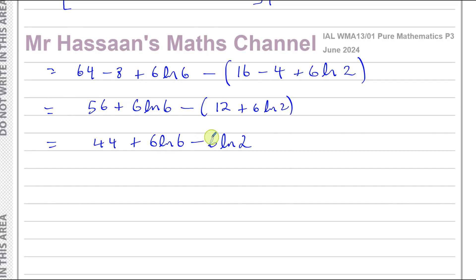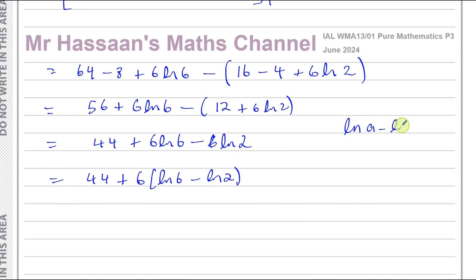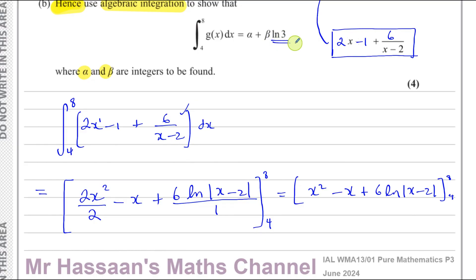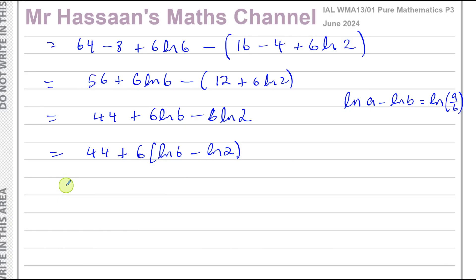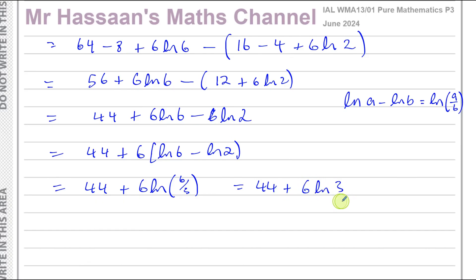The easiest way to handle 6·ln 6 minus 6·ln 2 is to factor out 6, giving 6 times (ln 6 minus ln 2). Using the laws of logarithms, ln A minus ln B equals ln(A over B), so this becomes 6 times ln(6 over 2), which is 6·ln 3. This gives us 44 plus 6·ln 3, which is exactly the required form.